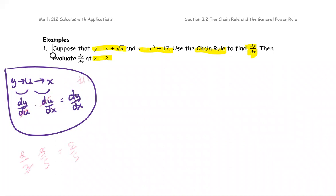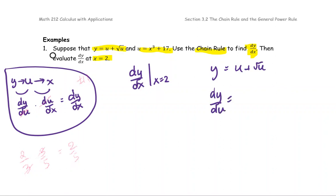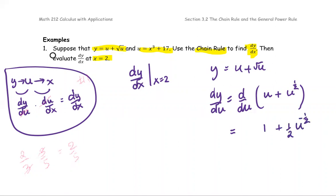This is form number one of the chain rule. Our goal is to find dy/dx at x equals 2. We have y as u plus square root of u, so dy/du is the derivative with respect to u of the quantity u plus square root of u. Writing square root of u as u to the power one-half for convenience with the power rule, dy/du equals 1 plus one-half u to the power negative one-half. Set this aside — we've got dy/du.